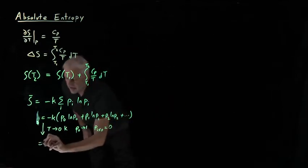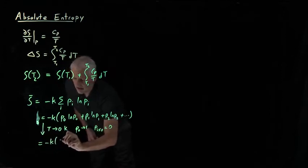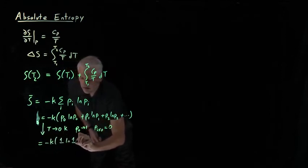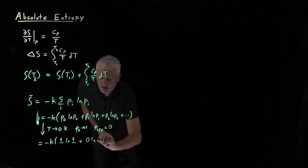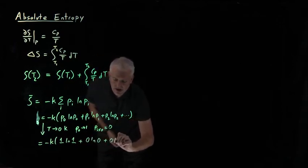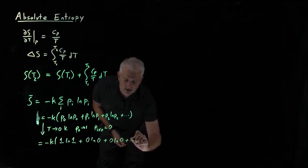So this expression would be minus K, 1 log 1 for the ground state, 0 log 0 for the first excited state, and for the second excited state, and so on.